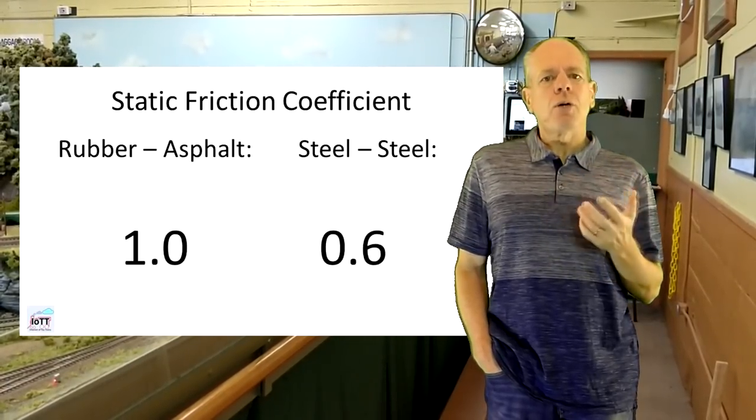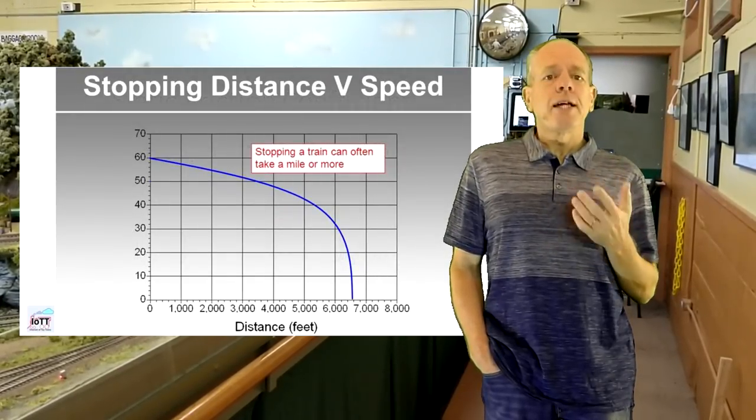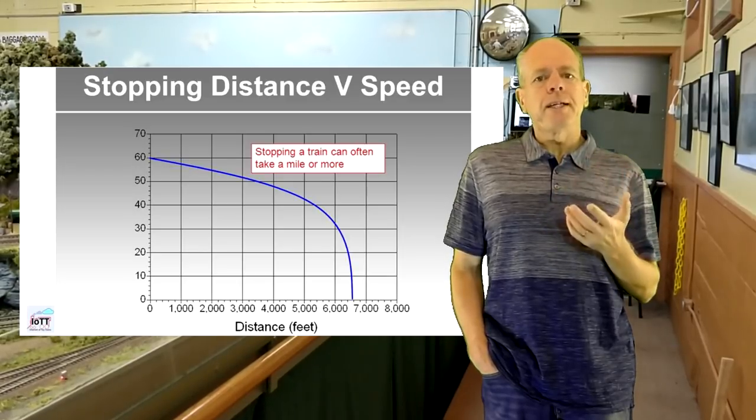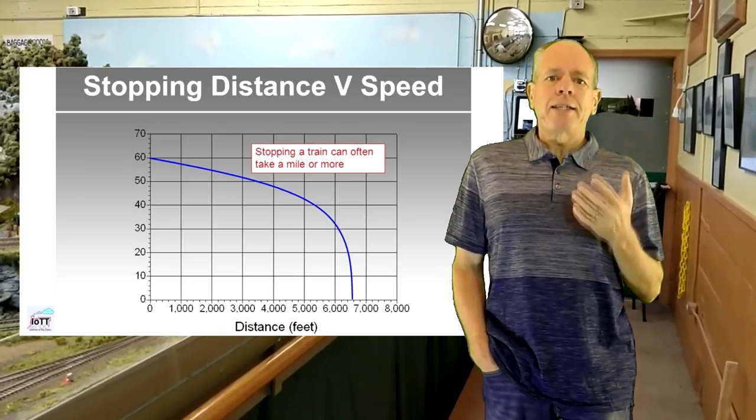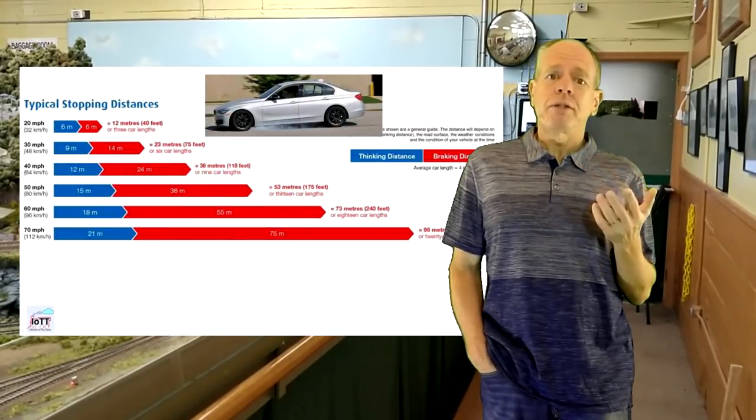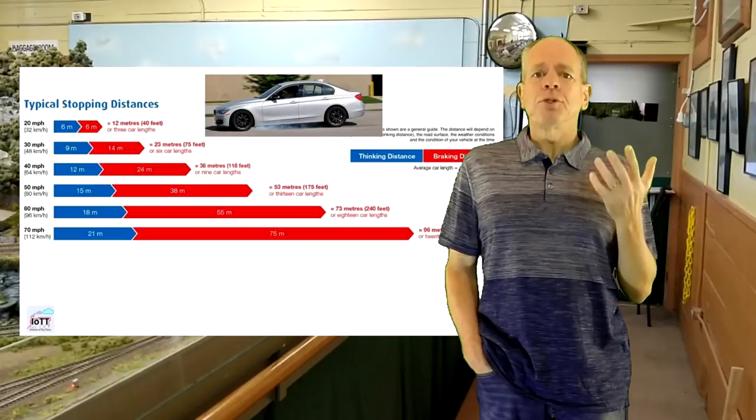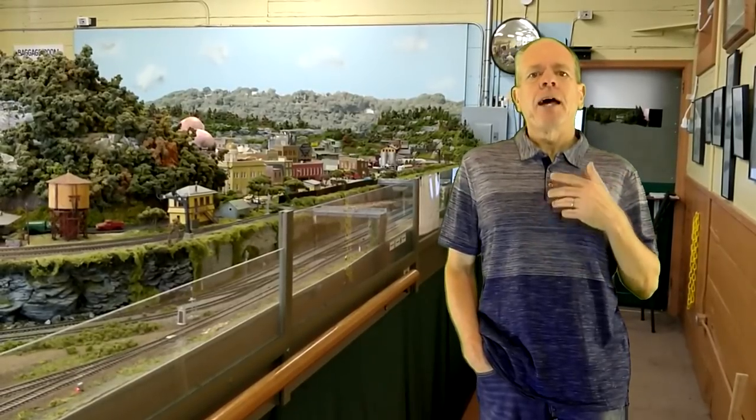This results in much longer braking distances for the same speed and mass. Furthermore, trains are heavy compared to cars, which further increases the braking distance of a train. In fact, stopping a freight train traveling at track speed can take up to 2 miles, while bringing a car that is going with the same speed to a full stop only takes a few dozen feet.